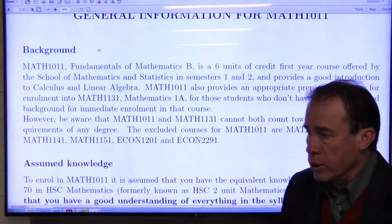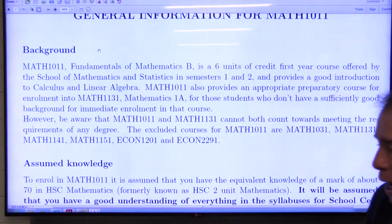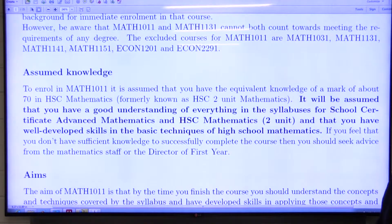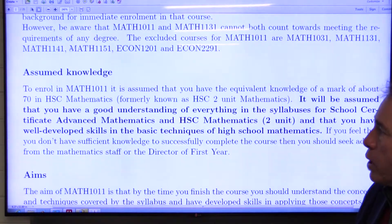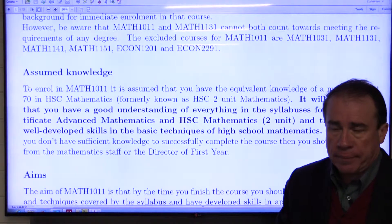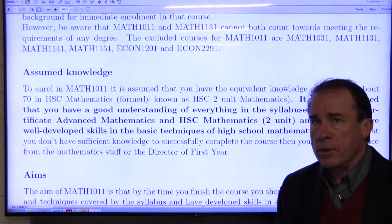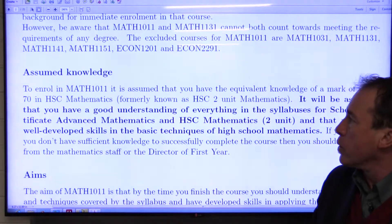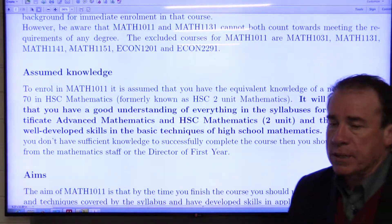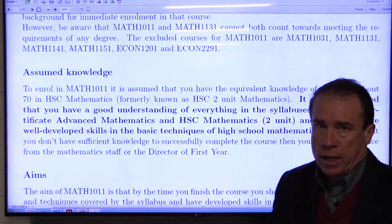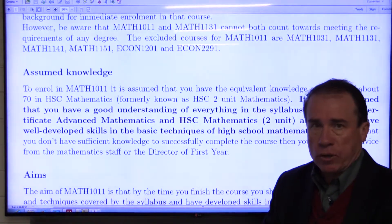The assumed knowledge in this course is that you have done HSC two unit mathematics — that's the calculus-based, not the general, but the calculus-based two unit mathematics course in New South Wales — and you have a mark of 70 or better. If you've come in via a different pathway and you're not quite sure how your mathematical background compares with this New South Wales two unit course, please come and get some advice. You will need to have a reasonable mastery of elementary calculus, algebra, and trigonometry from the HSC two unit course.